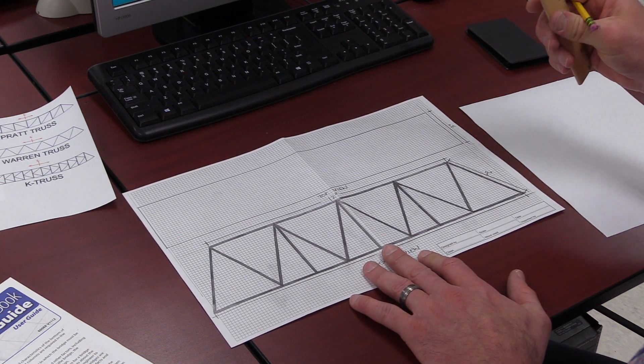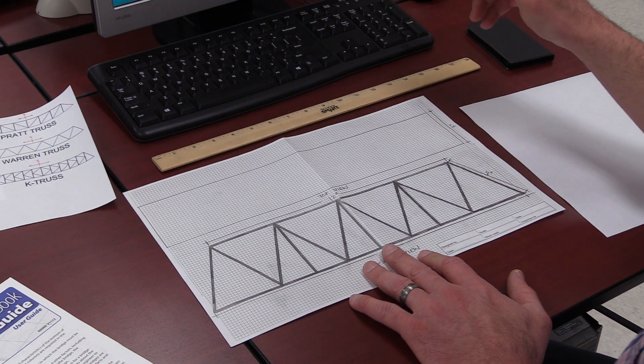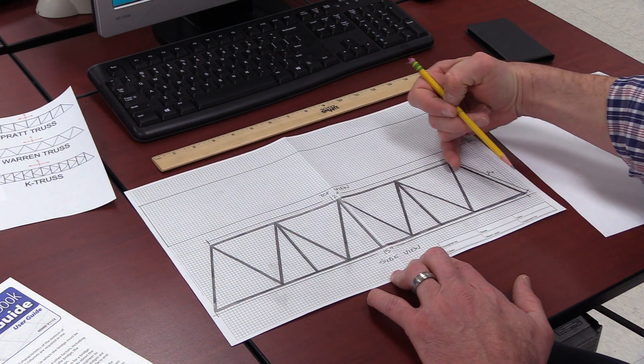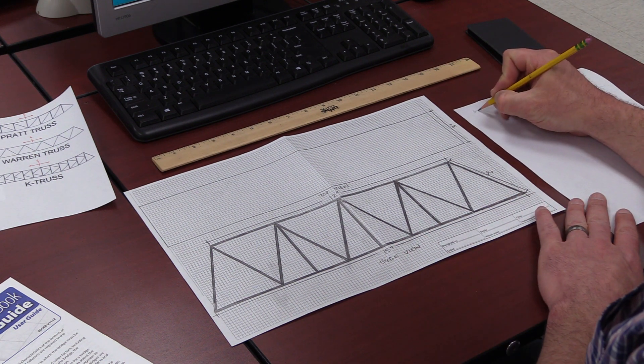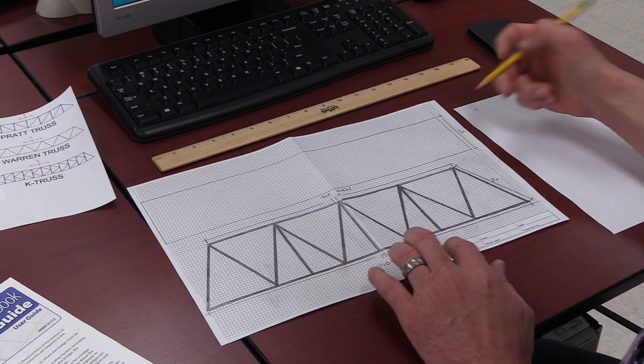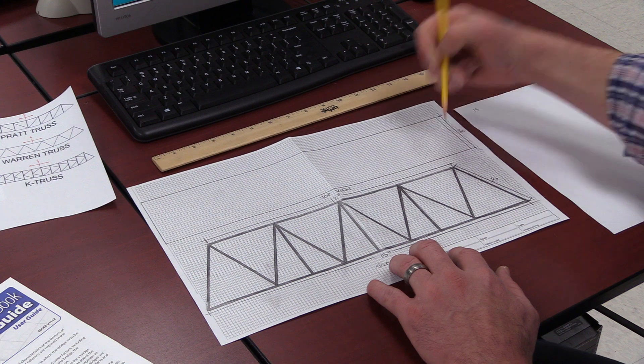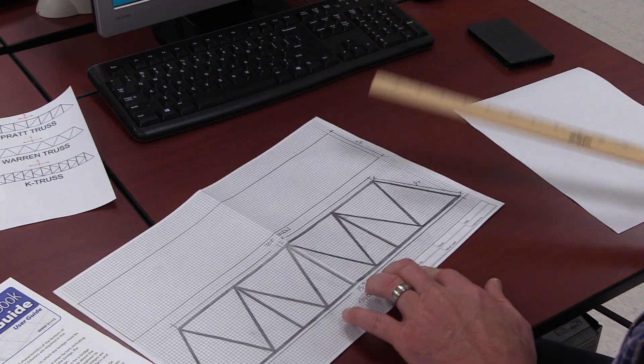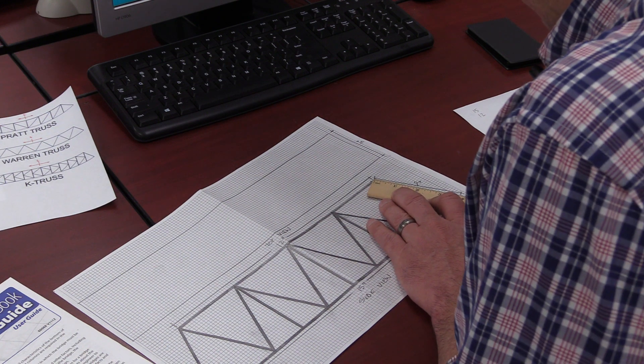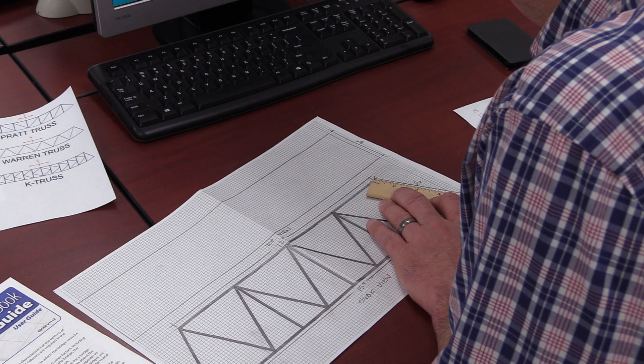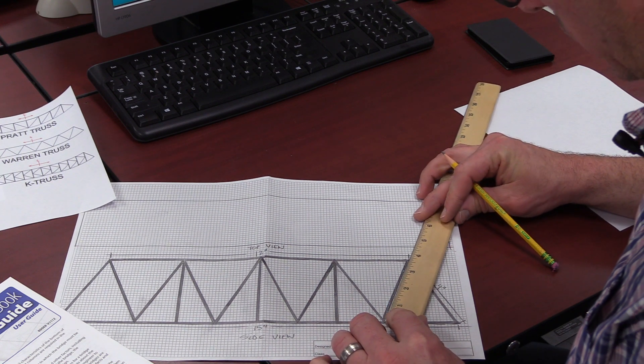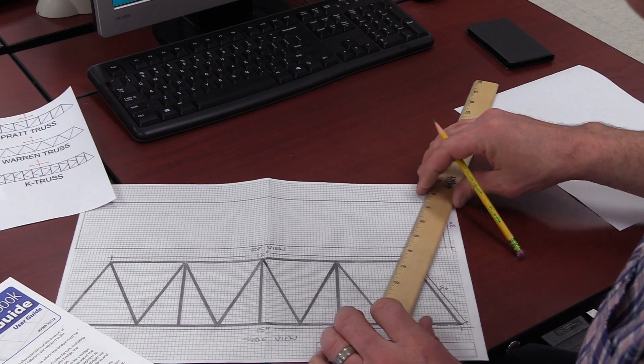Everybody's going to have a ruler. So I know my bridge is 15 inches long. I'm going to write that down - 15 on the bottom. I've got 12 along the top. And then that length is four inches, just around four inches.